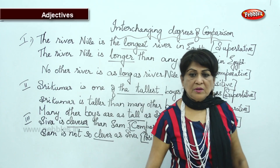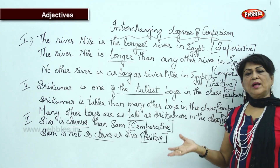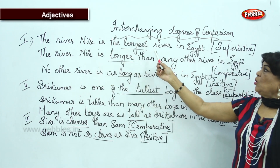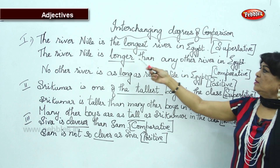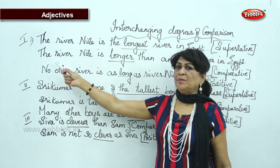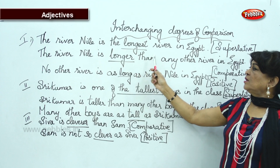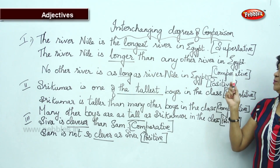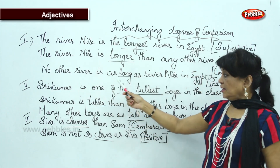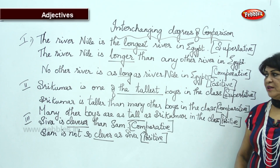I have taught you three different ways of interchanging degrees of comparison without changing the meaning. 'The river Nile is the longest river in Egypt' — longest is superlative. Changing to comparative: 'The river Nile is longer than any other river in Egypt.' Changing to positive: 'No other river is as long as river Nile in Egypt.'